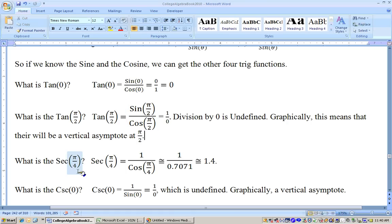And you can get all of them like secant of π over 4. Well, secant is 1 over the cosine of π over 4. Cosine of π over 4 is about 0.7071—it's actually the square root of 2 over 2. And 1 over that would be 1.4 approximately, which is actually the square root of 2.